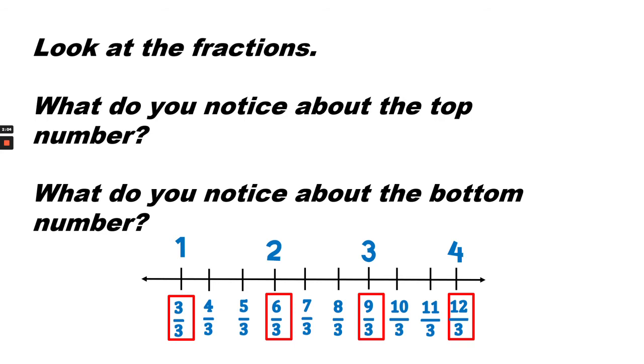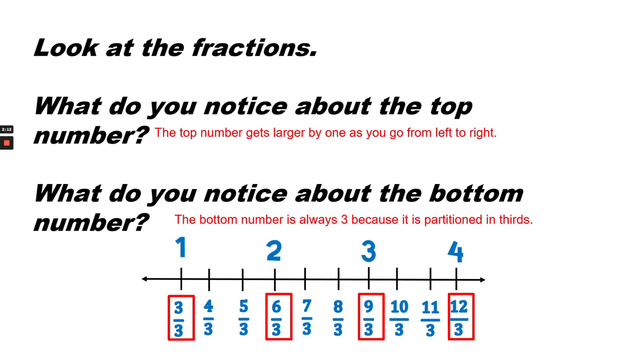Look at the fractions. What do you notice about the top number? What do you notice about the bottom number? The top number gets larger by one as you go from left to right. The bottom number is always three because it is partitioned into thirds.